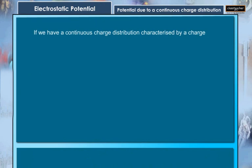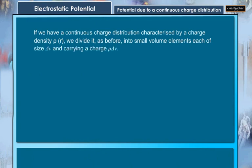If we have a continuous charge distribution characterized by charge density ρ, we divide it as before into small volume elements each of size dV and carrying a charge ρdV. We then determine the potential due to each volume element and sum or integrate over all such contributions, and thus determine the potential due to the entire distribution.